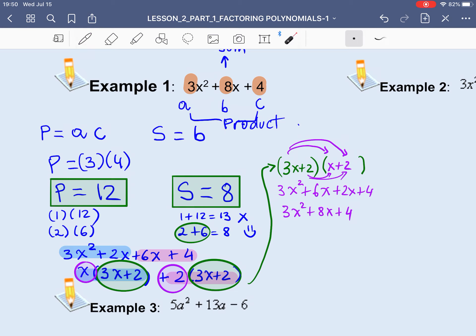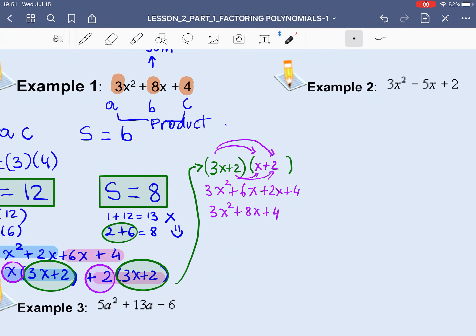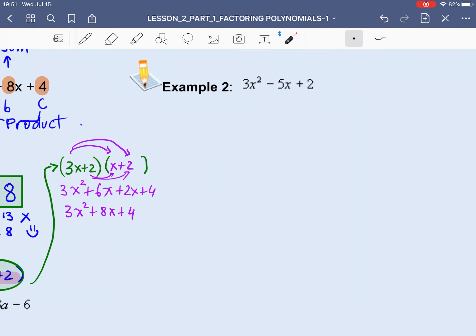Now, one little trick that I want to mention here is this. In this step, when you take out the greatest common factor from each set or each pair of terms, you must always end up with a common binomial. If you do not end up with a common binomial, check and see your numbers because most likely you didn't break down the middle term into the correct numbers you should have had. Alright? So let's move on to our next example.